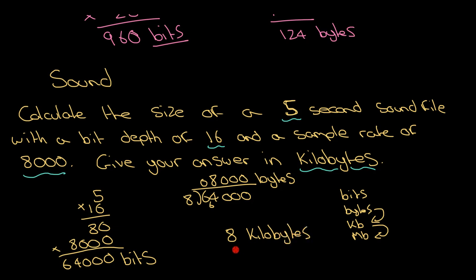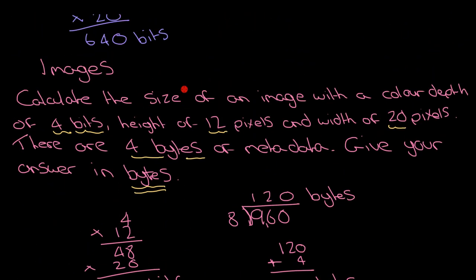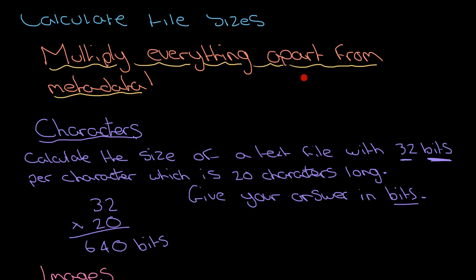So that's how I would answer that question. That's probably as complicated as I hope you're going to get. If you remember for images, sound, and characters, all you really need to do is multiply everything together apart from metadata - you add that on. And then really you're just looking at what are you giving the answer in. Is it asking you to give it in bits, bytes, or something else? And you do whatever you need to - divide it by 8 or divide by a thousand as appropriate. That's how you calculate file sizes.